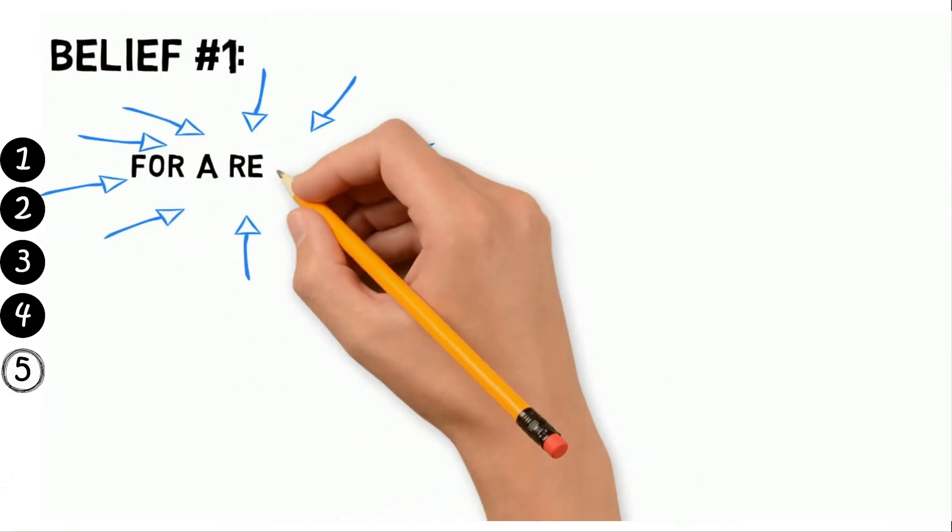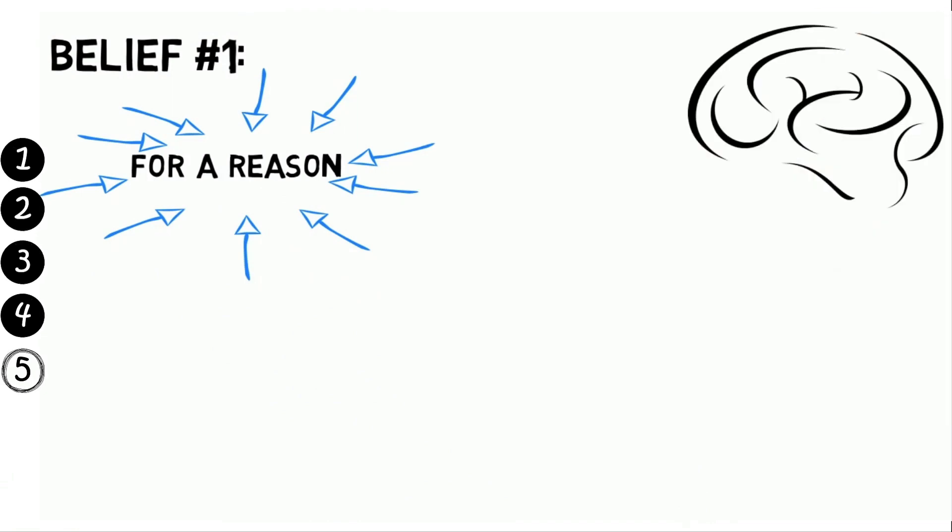Belief number one: everything happens for a reason and has a purpose. Belief in limits results in limited people.